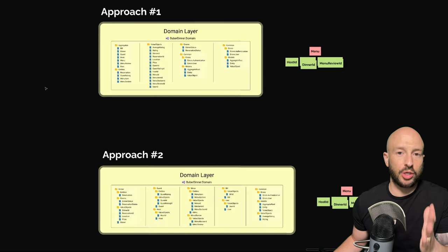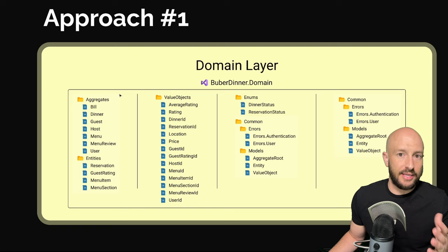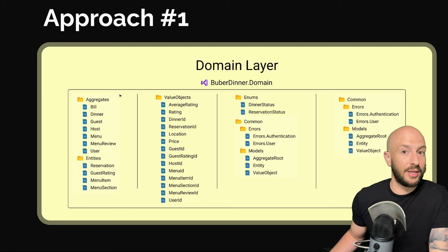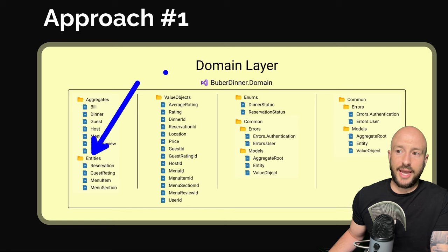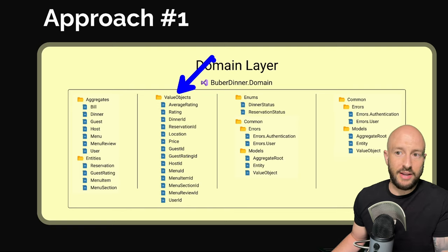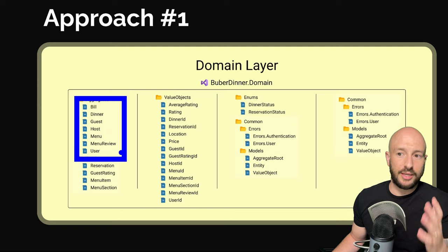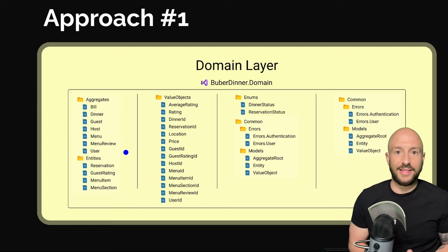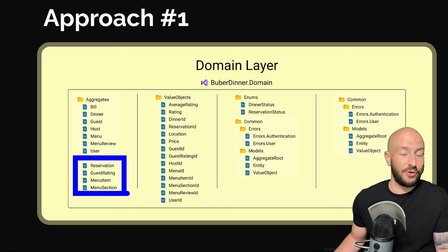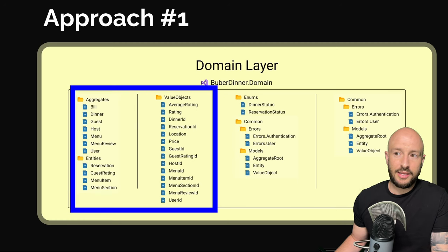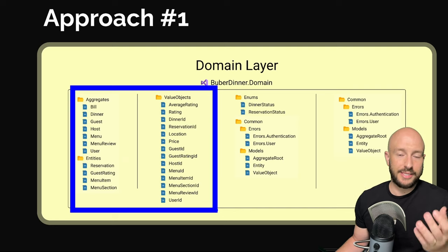The question is basically how are we going to structure our domain layer? Looking at approach number one — this is an approach that's very common. Most of the projects that I've seen inside Microsoft and outside use something similar to this, where basically each type receives its own folder. We have a folder for the aggregates, for the entities, for the value objects, and in the future for domain events, and inside each one the corresponding types sit inside.